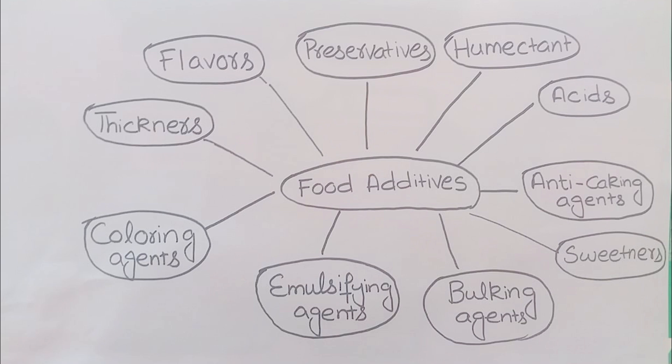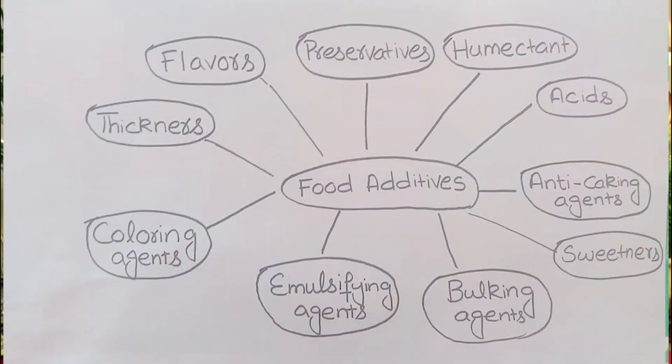After this we have Preservatives, which are a very important category. Commercially, preservatives are definitely used. We add preservatives so that our food quality and product is maintained. In commercial products, benzoic acid and different salts are very important preservatives that are widely utilized.